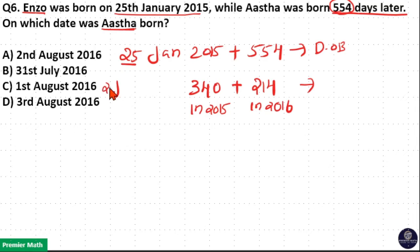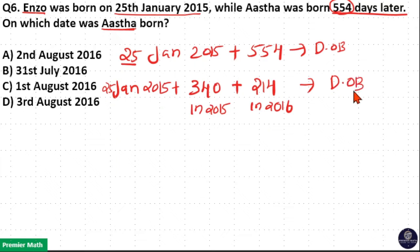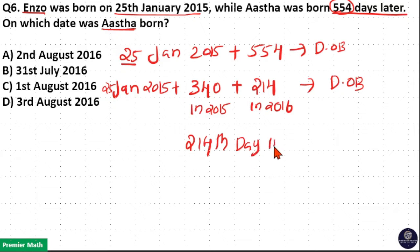So 25th January 2015 plus 554 days gives us the date of birth. We need to find out the 214th day in 2016, which is the date of birth.